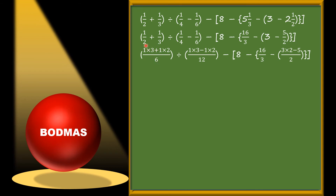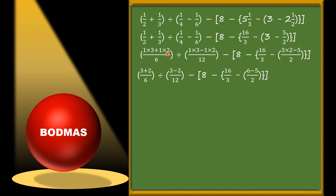With LCM 6: 3×1 + 2×1 over 6. With LCM 12: 3×1 − 2×1 over 12. With LCM 2: 3×2 − 5 over 2. Solving these: in the first bracket 3+2 = 5/6. In the second bracket 3−2 = 1/12. In the third bracket 6−5 = 1/2. The things in between remain as they are.